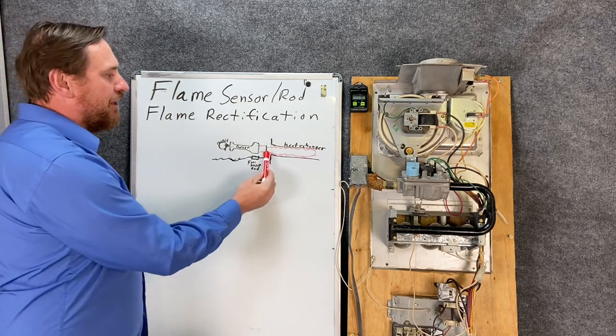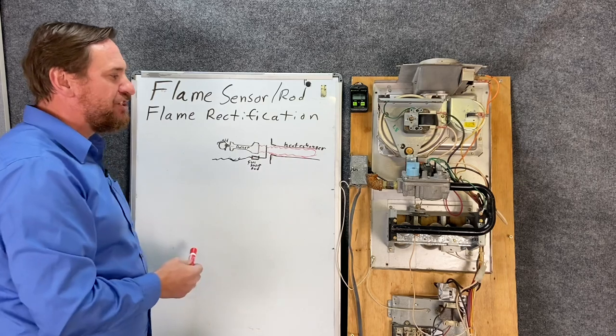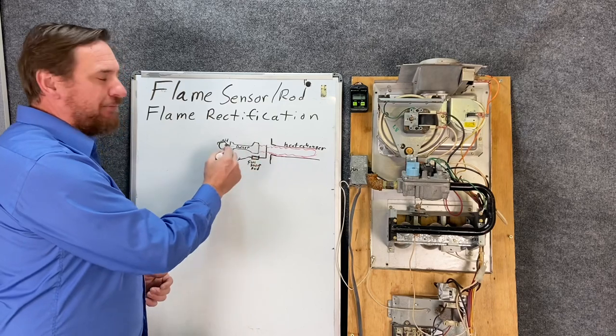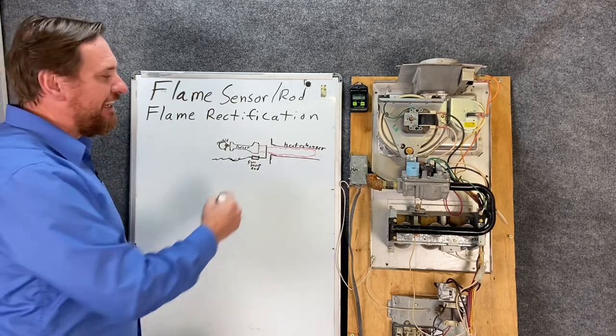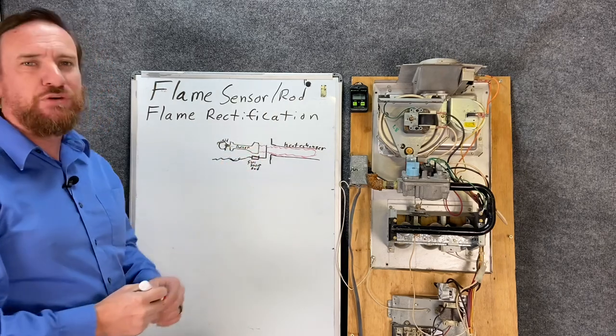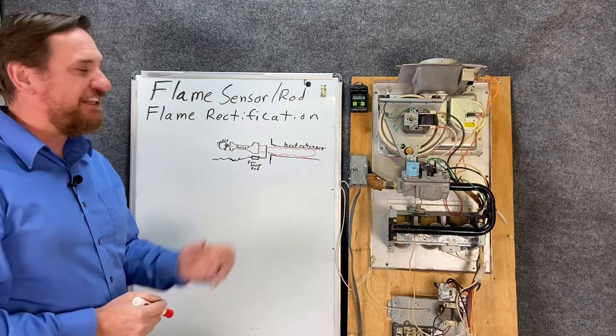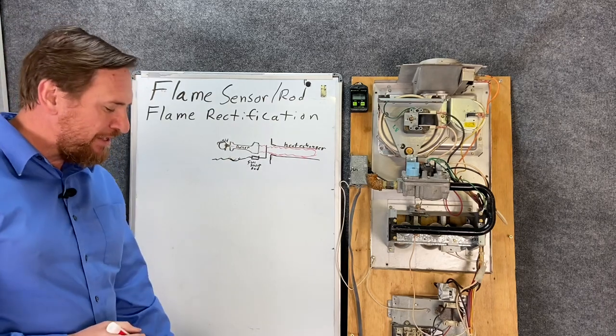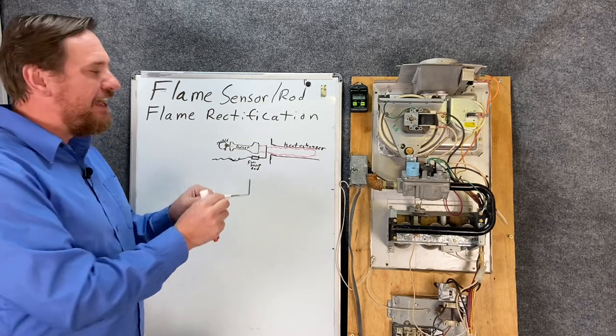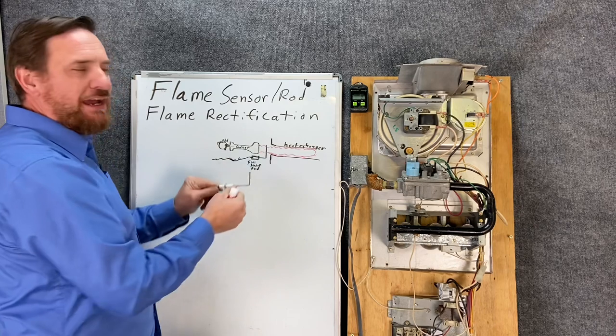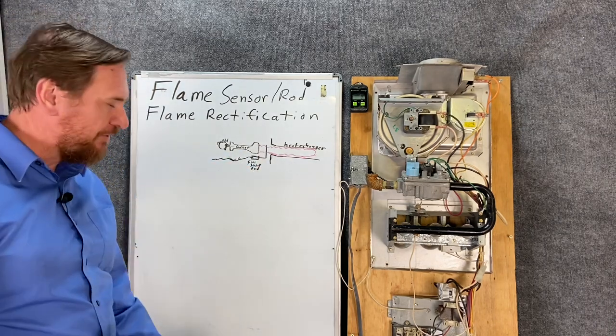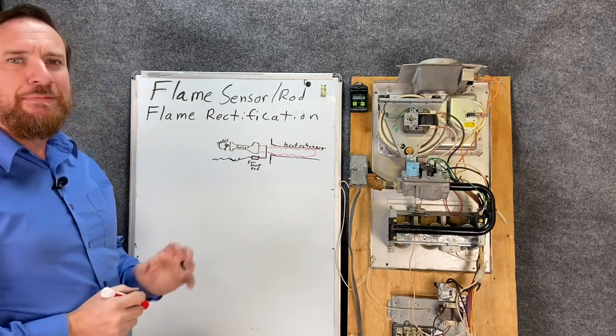The flames conduct electricity, allowing electricity to flow from the flame sensor to the metals. Now some people argue that it's going to the burner side, some people argue that it's grounding out to the heat exchanger side, some people say it's both. I really don't care, as long as the unit is grounded, the burners are grounded, and the control board is grounded, it gets that signal back to the control board. So it's really cool that the flame itself is actually conducting electricity. The flame itself is the switch.